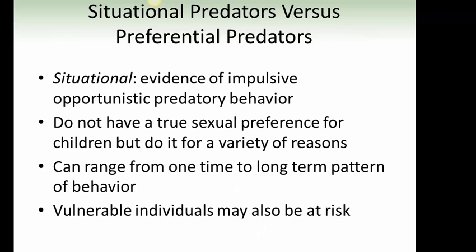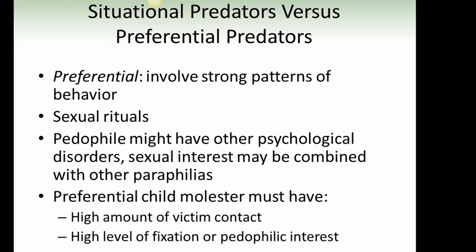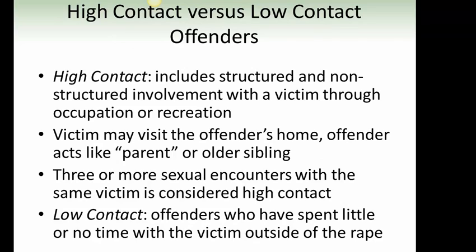Situational predators show evidence of impulsive, opportunistic, predatory behavior. They do not have a true sexual preference for children but offend for a variety of reasons, ranging from a one-time event to a long-term pattern. Preferential predators involve strong patterns of behavior and sexual rituals. A pedophile may have other psychological disorders, and sexual interest may be combined with other paraphilias. Preferential child molesters must have a high amount of victim contact and a high level of fixation or pedophilic interest. High-contact offenders have structured and non-structured involvement with a victim through occupation or recreation; the victim may visit the offender's home, and the offender acts like a parent or older sibling — three or more sexual encounters with the same victim is considered high contact. Low-contact offenders have spent little or no time with the victim outside of the assault.